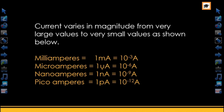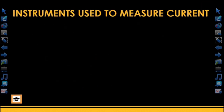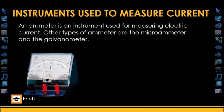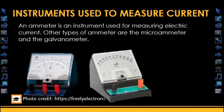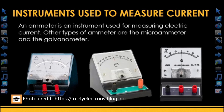These symbols are used to represent the values of currents depending on their magnitude. Now let's take a look at the instruments used in measuring current. The instrument is called the ammeter.